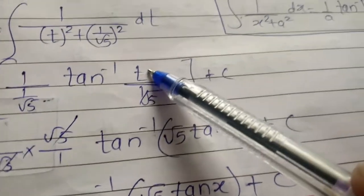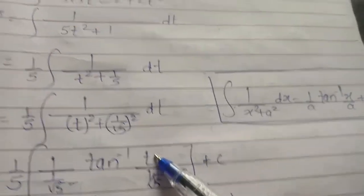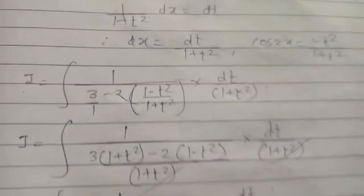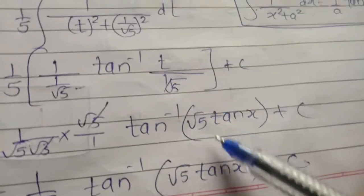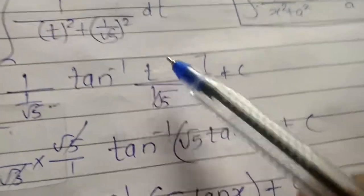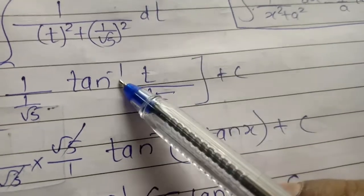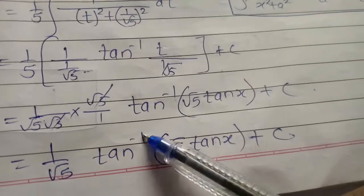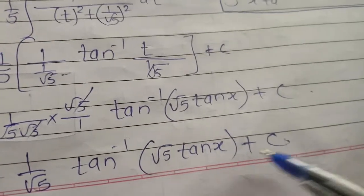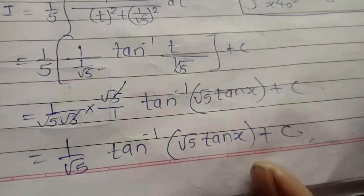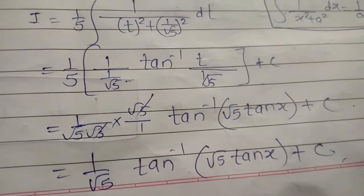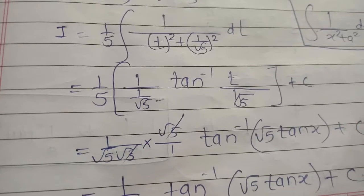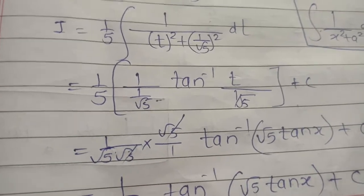Substituting back t equals tan x, we get the final answer for Example 5. This completes Question number 2. There are 9 examples in this question, and we have now finished 5 of them.